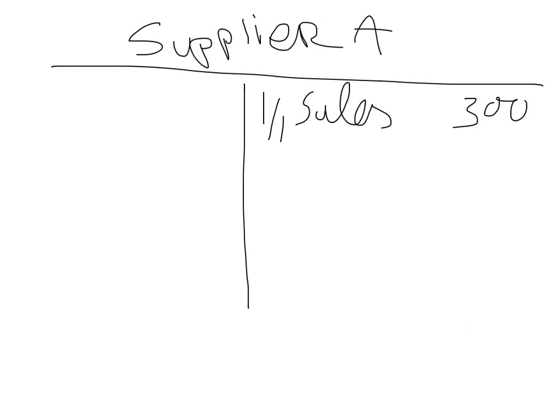One more thing to add: if you are to balance an account that only has got one side — so in this case there's only a balance on this side — the way you balance that is a whole lot easier. So you got only one transaction and obviously it's only on this side here. All you need to do is draw a line, and this is of course again done on the last day of the month.